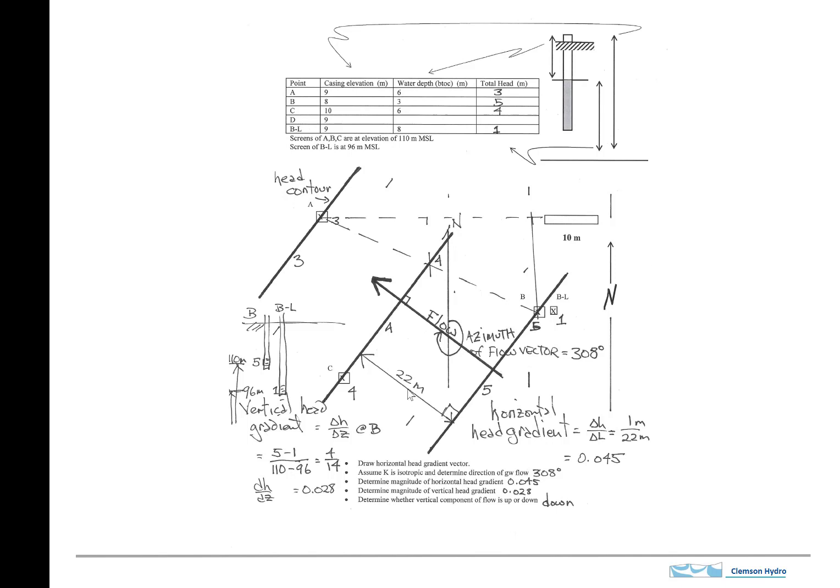And the hydraulic head gradient is, there's the distance measured using this scale, and the delta H would be 1. So here the horizontal head gradient is calculated. It's 1 meter over 22 meters. So that's a dimensionless number, 0.045.